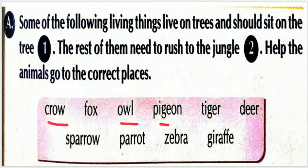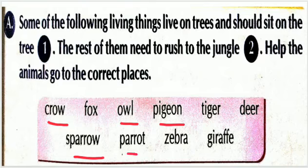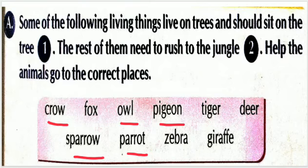Pigeon — toh pigeon kya hai? Birds hai. Next — tiger, tiger birds nahi hai. Deer — deer bhi birds nahi hai. Sparrow — sparrow birds hai. Next — parrot, toh voh bhi kya hai? Birds hai. Toh bachcho, in birds ke naam hume picture one mein likhne hain. Kaun-kaun se birds ke naam hain? Crow, owl, pigeon, sparrow aur parrot.